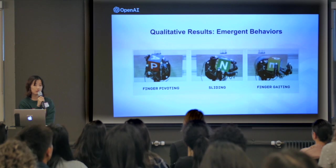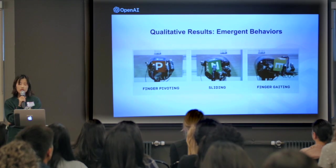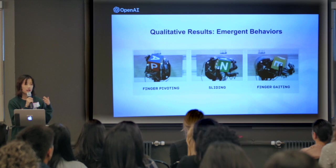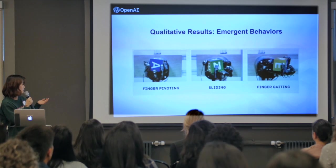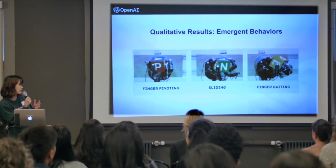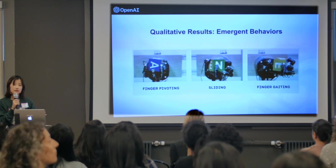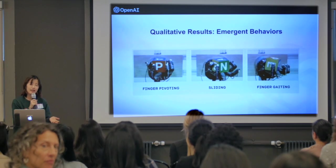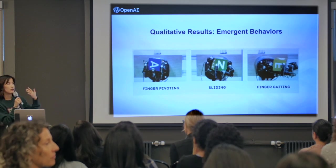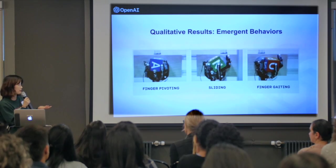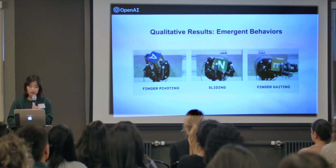When we deployed our model in reality, we noticed a couple of strategies learned by the robot — like finger pivoting, sliding, and finger gaiting — which are also commonly used by humans. Interestingly, we never explicitly gave rewards or encouraged those strategies. They just emerged autonomously.